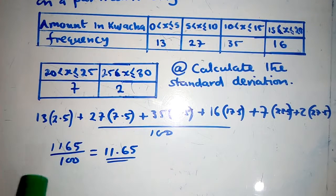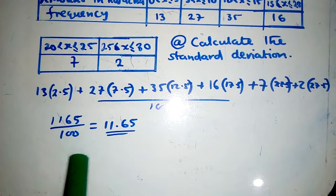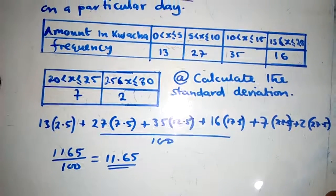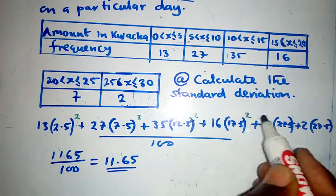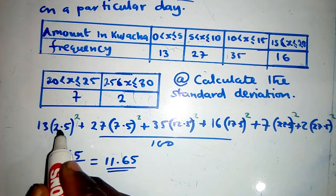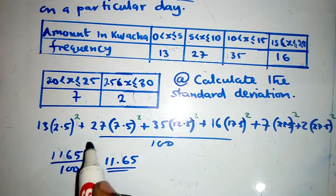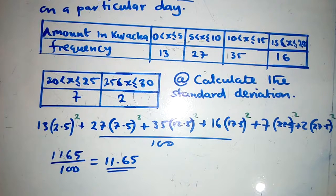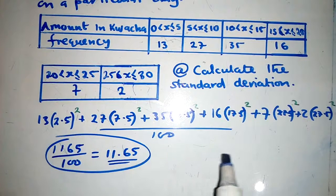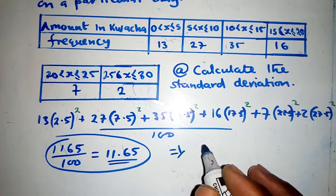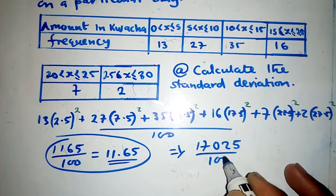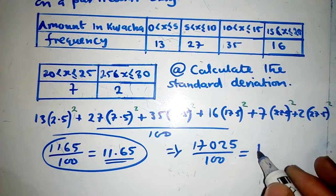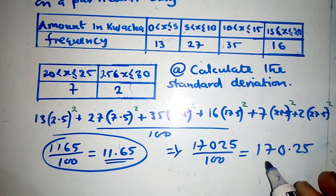Next, copy those values down and square the midpoints — put a power of 2 on each bracketed midpoint value. Multiply each squared midpoint by its frequency, sum them all up, and divide by 100. This gives you 17,725 divided by 100, which equals 170.25.